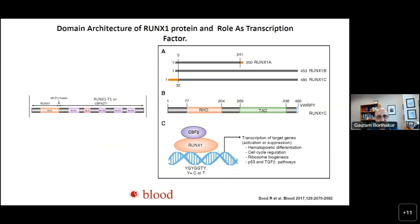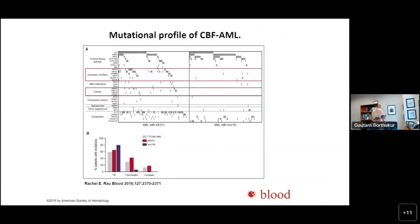RUNX1 has three isoforms and contains a Runt homology domain — the DNA binding domain — and a transactivation domain. When the translocation happens, the Runt homology domain or DNA binding domain remains intact, but the transactivation domain is interrupted. Even though core binding factor AML is driven by unique translocation events, additional mutations are needed for the full development of the leukemia, and interestingly these mutations also affect outcomes.